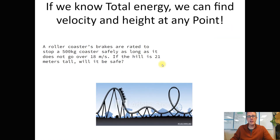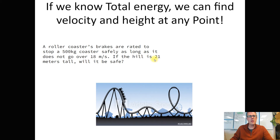Here's where this becomes really useful: if we're trying to find a missing variable, we can compare two points to each other to figure that out. Say a roller coaster's brakes are rated to stop it safely as long as it never goes over 18 meters per second. The designers want the first hill to be 21 meters tall and aren't sure if that's within the safety range. They don't want to test it — they want to know ahead of time. That's our job.